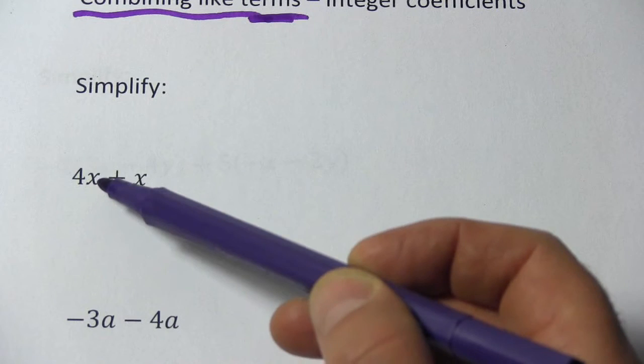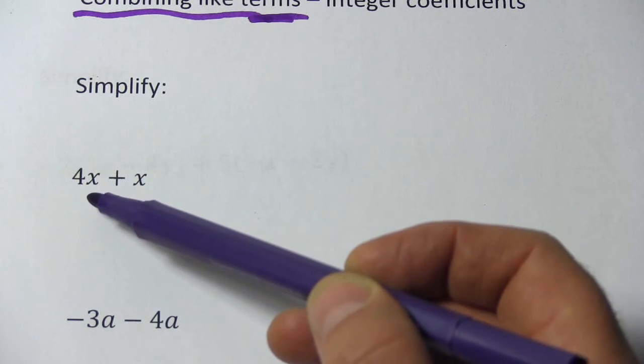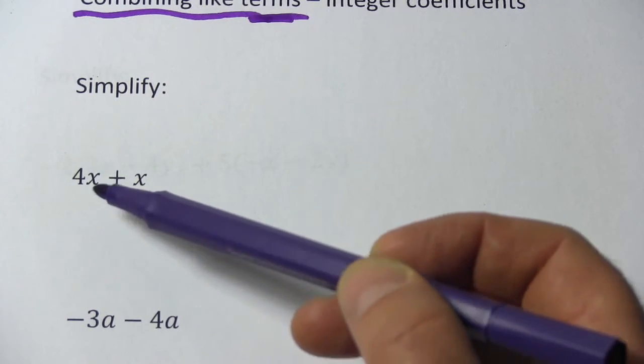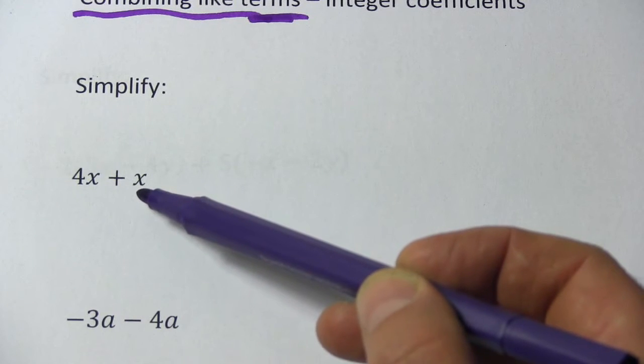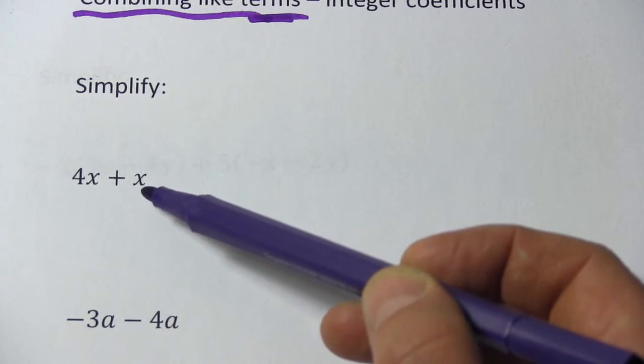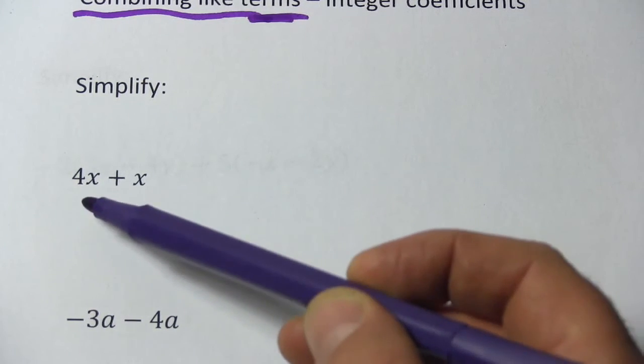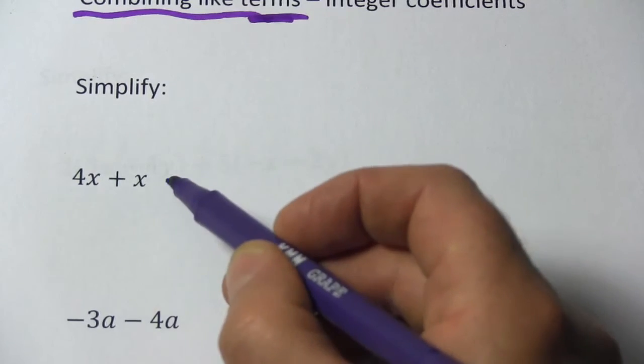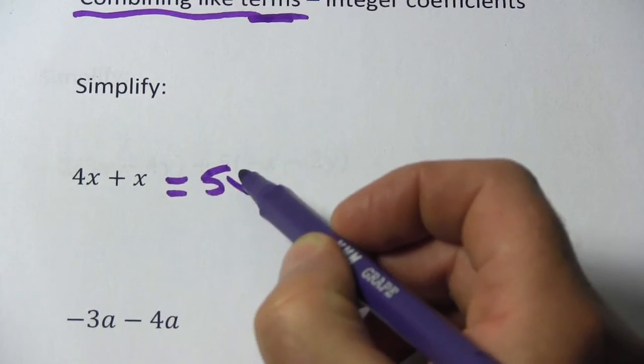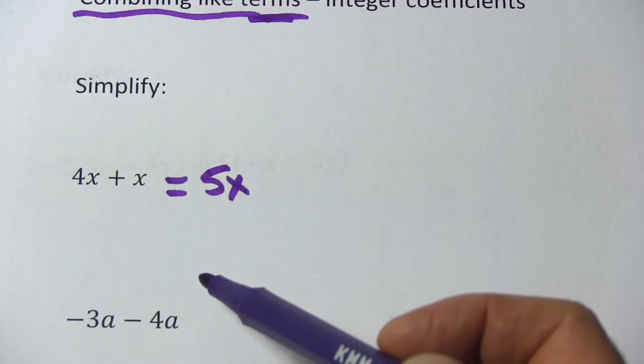So the way you can think about this first one, 4 times x or 4x, that's 4 x's. And here's another x. This is 1 times x or 1x. We just don't write the 1. So this is 4 x's plus 1x. That equals 5 x's or just 5x.